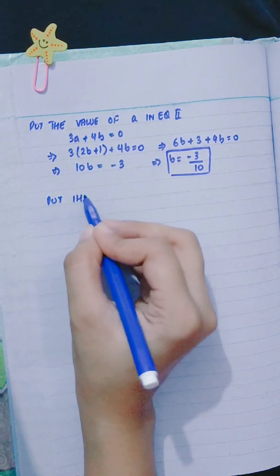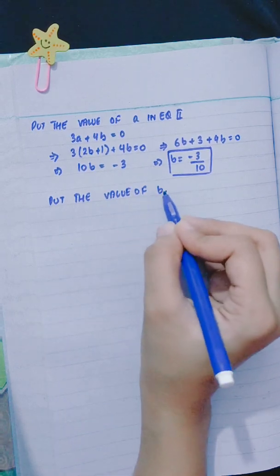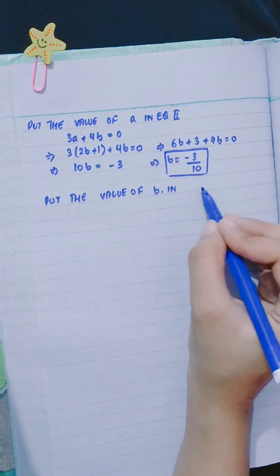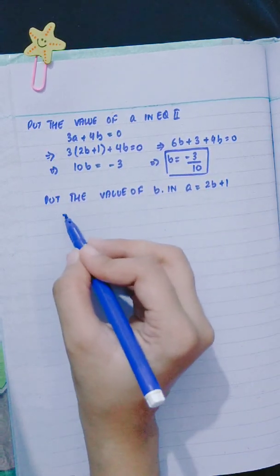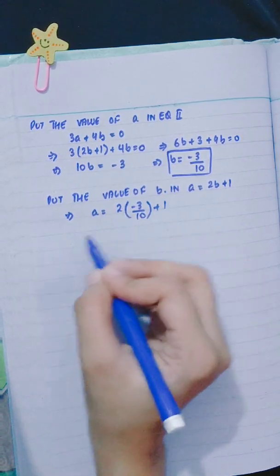Now put the value of b in a = 2b + 1. So we have a = 2(-3/10) + 1, which equals -6/10 + 1 = 2/5.